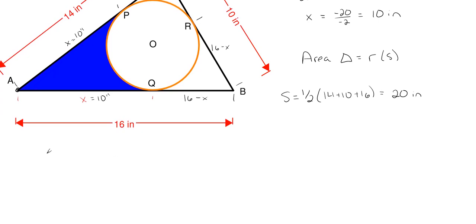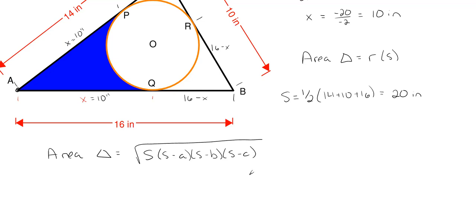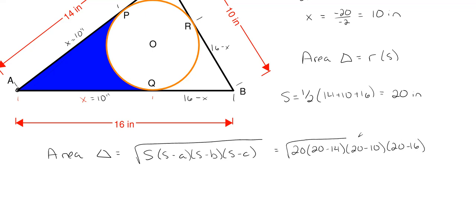Using Heron's formula, the area of our triangle equals the square root of S times (S minus one side) times (S minus another side) times (S minus the third side). Plugging in our values: the square root of 20 times (20 minus 14) times (20 minus 10) times (20 minus 16). This gives us the square root of 4,800, which equals 40 square roots of 3 inches squared for our overall triangle area.